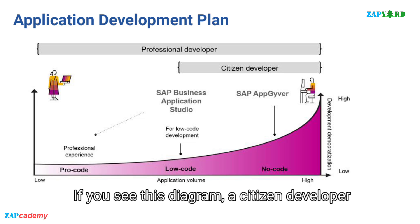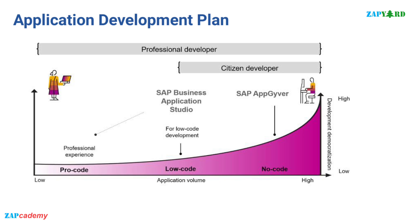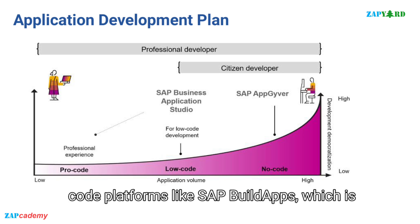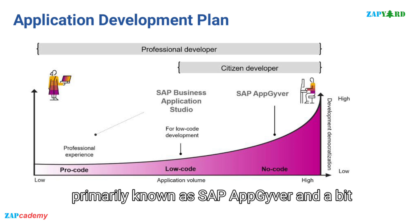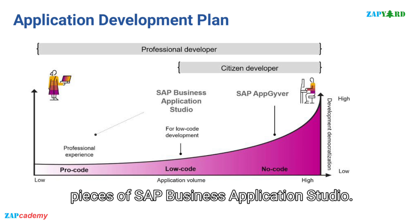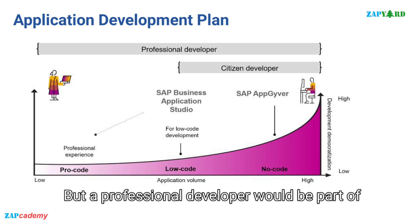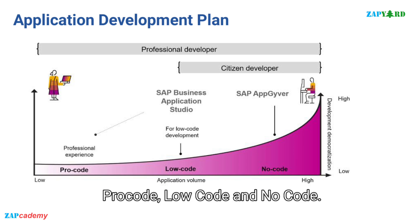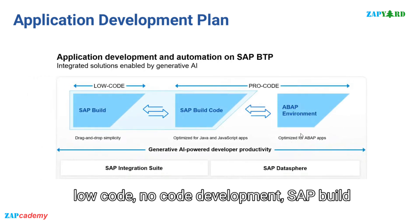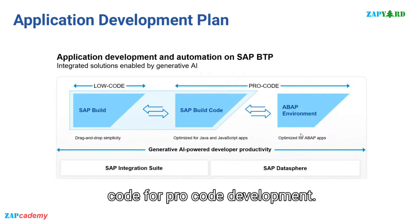If you see this diagram, a citizen developer can develop applications using low code and no code platforms like SAP Build Apps, which is primarily known as SAP AppGyver, and bits and pieces of SAP Business Application Studio. But a professional developer would be part of Pro Code, Low Code, and No Code. So it is now very clear that SAP Build Apps is used for low code and no code development, and SAP Build Code is for Pro Code development.